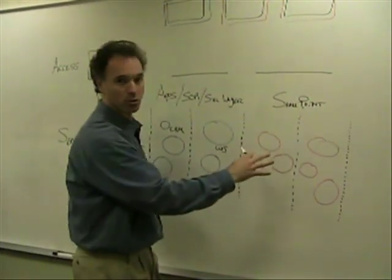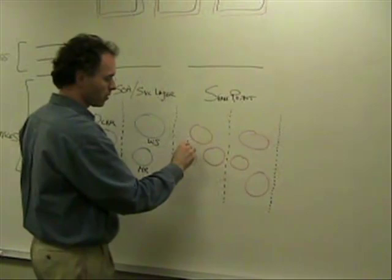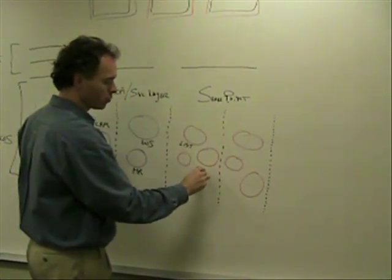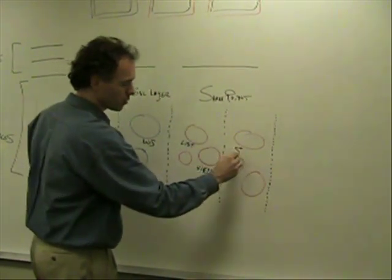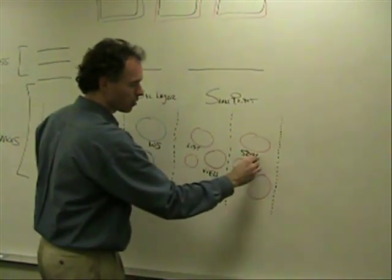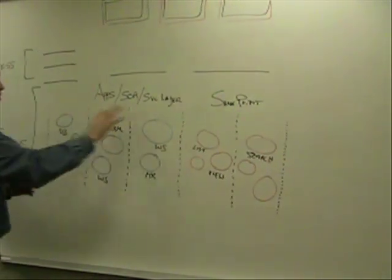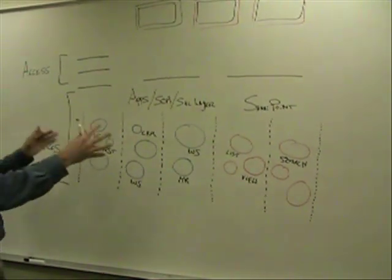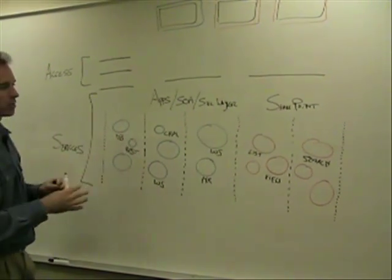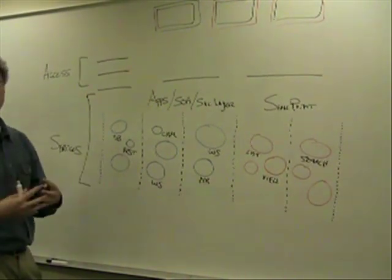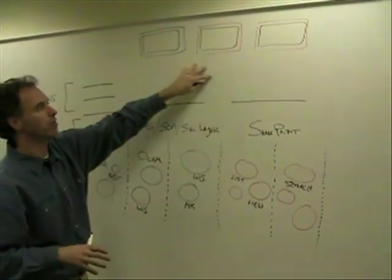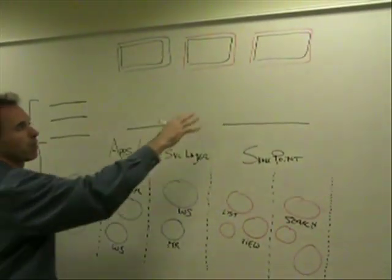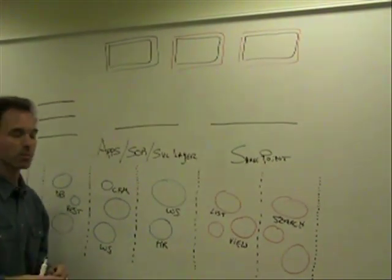In SharePoint, we've got a set of services as well. Within our different sites, we're going to have list services, views, search—certainly an important piece. So we've got the services layer, and what we often want to do is combine information from these various services and use them to create our applications. We might have some applications that live outside of SharePoint, we might have other applications that are SharePoint sites themselves.